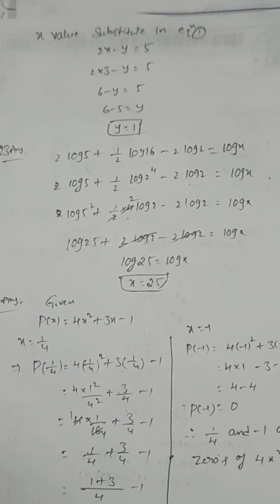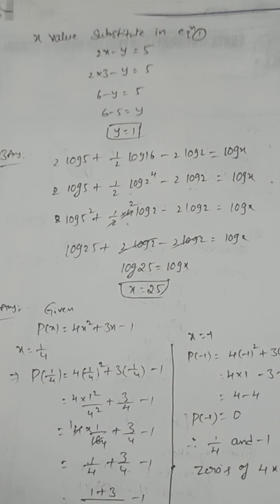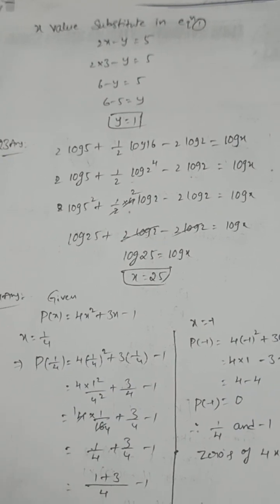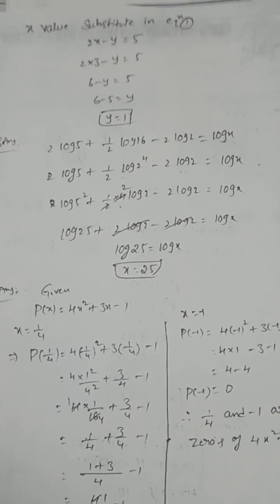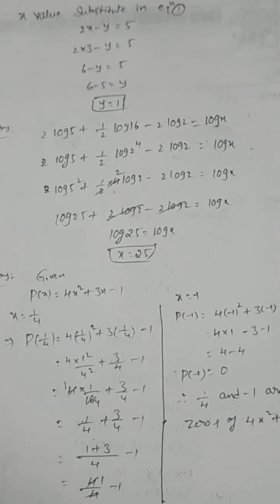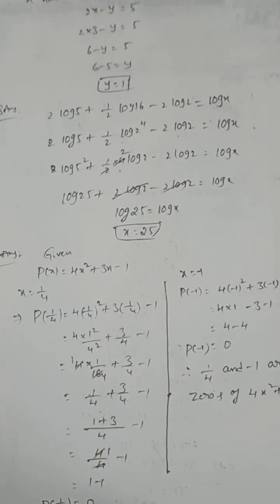Find x: 2 log 5 + (1/2) log 16 - 2 log 2 = log x. Using logarithm law: log xⁿ = n log x. Then x = 25. Check whether 1/4 and -1 are the zeros of this polynomial. Put x = 1/4, the polynomial becomes 0. Put x = -1, the polynomial becomes 0.